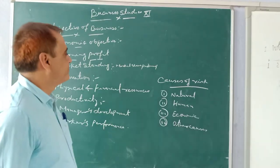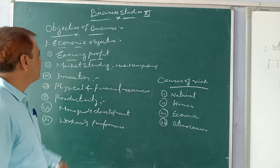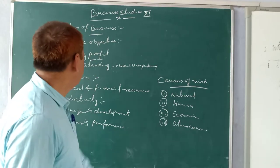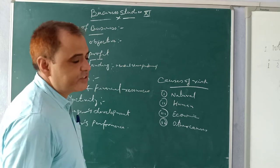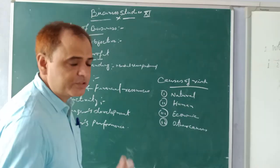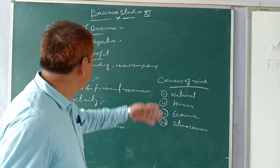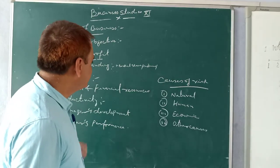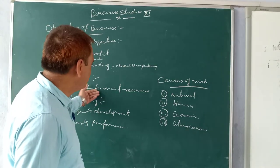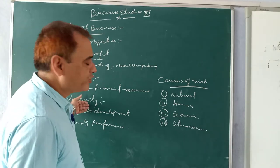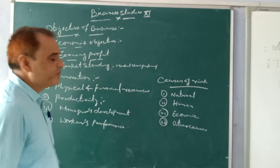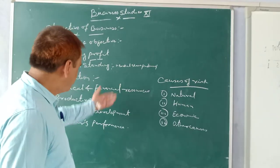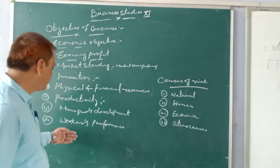So here we have the economic objectives. The first objective of the company is earning profit — if you don't make profit you cannot sustain in the market. The second is market standing — you should increase your market share and customer base. Third is innovation, spending on new products and means of production. Fourth is physical and financial resources. Fifth is productivity. Sixth is management development and training.